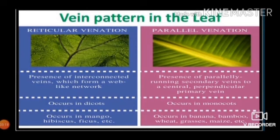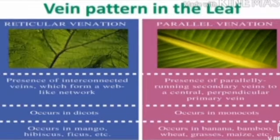There are two vein patterns in leaves: reticulate venation and parallel venation. In reticulate venation, interconnected veins form a web-like network. In parallel venation, secondary veins run parallel to a central primary vein. Reticulate venation occurs in dicots, such as mango and hibiscus. Parallel venation occurs in monocots, such as bamboo, grasses, and maize.